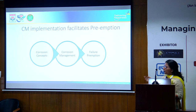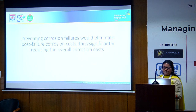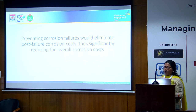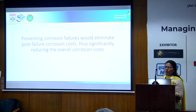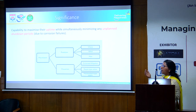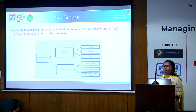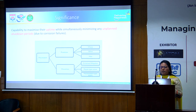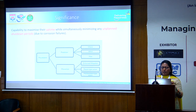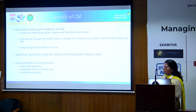If corrosion management is in place, the corrosion concepts will lead to adequate failure preemptions. Preventing corrosion failures will indirectly eliminate post-failure costs and thus reduce overall cost. Preemption has two components: prediction and prevention. Prediction is when, where, and how the failure can occur; prevention is how to mitigate it through preventive measures — repair or replacement. This ensures that plant uptime is higher, shutdowns are decreased, failures are minimized, and costs are optimized.